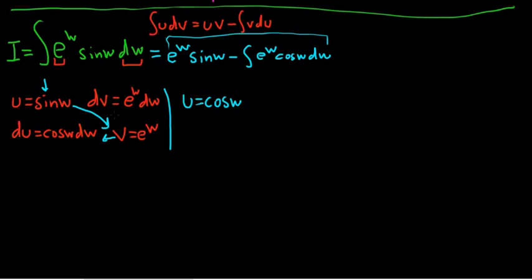So either let u be e and continue with that throughout the process, or let u be the trig function. So we chose the trig function, so u is equal to cosine w. And then dv is equal to e to the w dw.